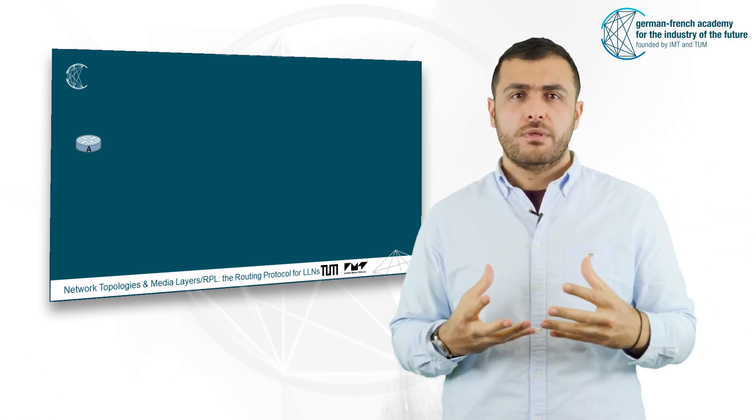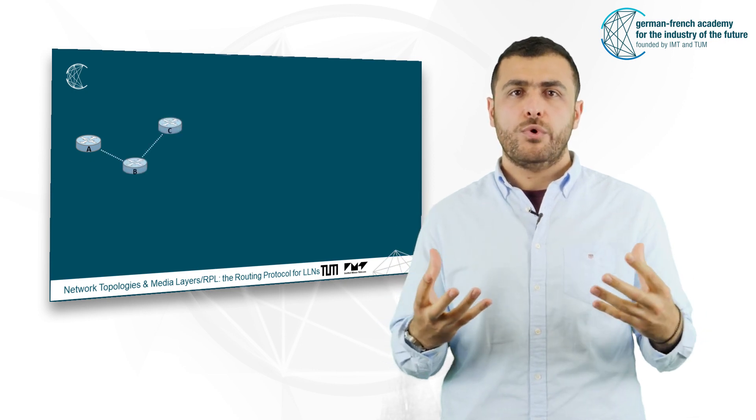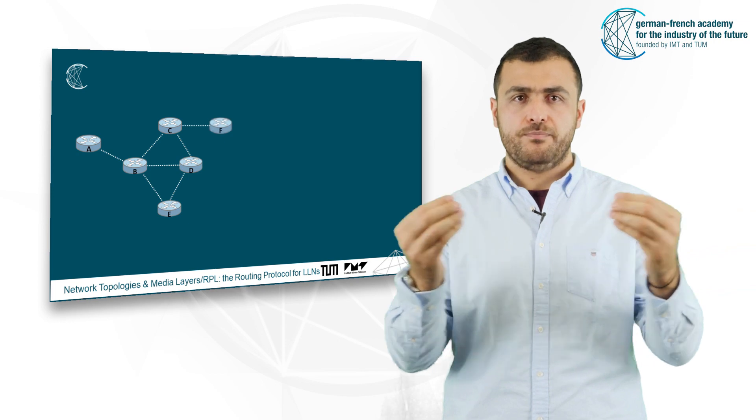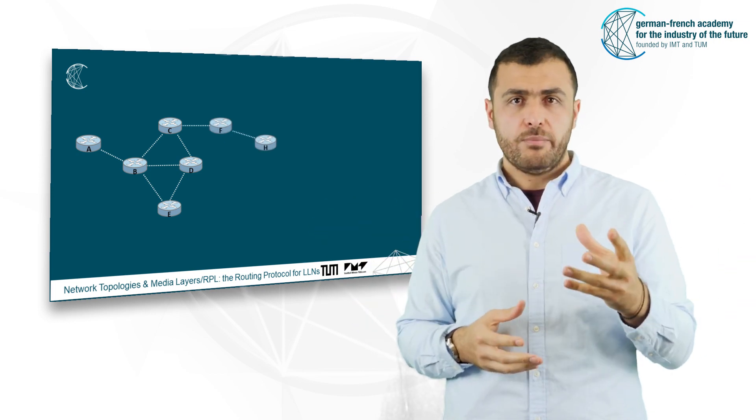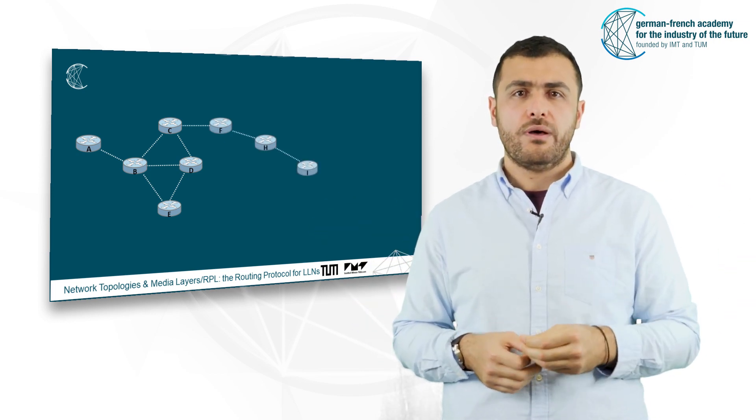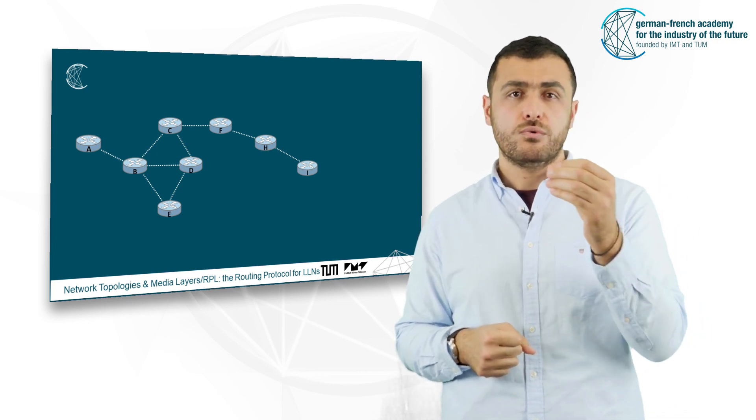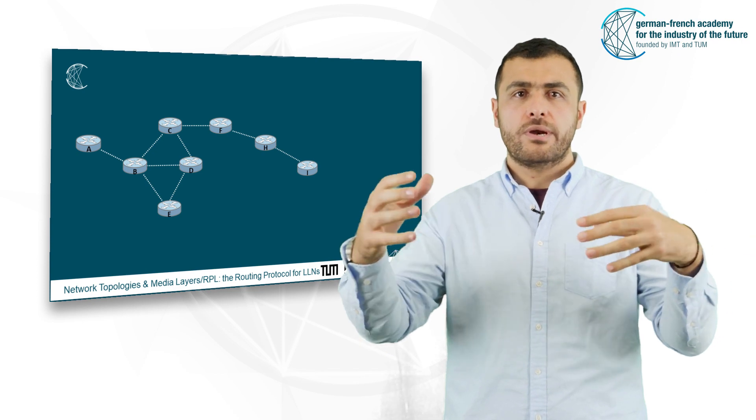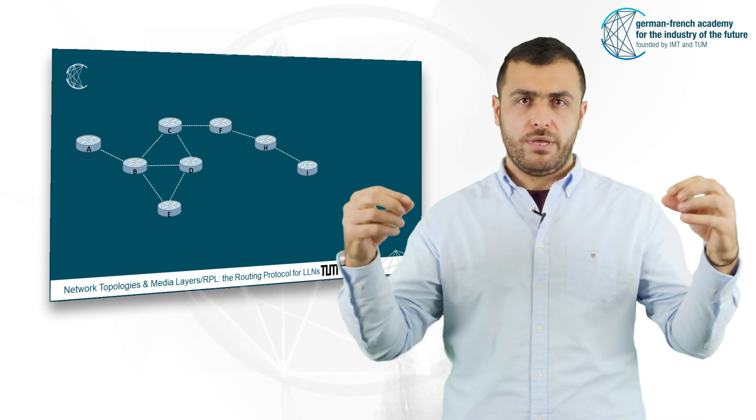Let's assume you have a wireless network where some of the nodes do not have direct communication. For example, in this network where you have 8 nodes from A to I and where a line between the nodes represents a possible radio communication.